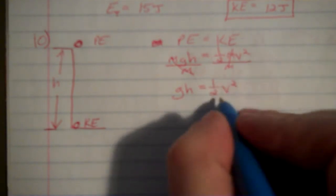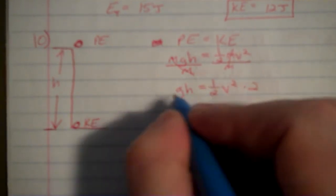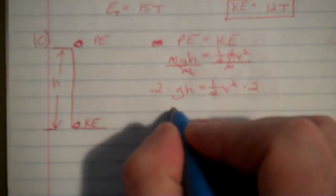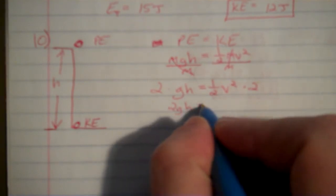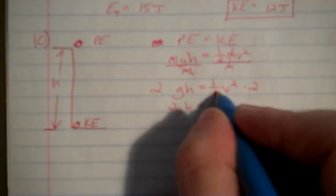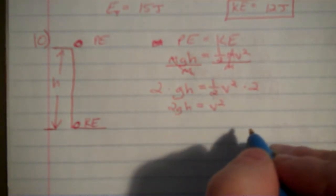Now I've got the half in there, I want to get rid of that. So I'm going to multiply by 2, I have to do that to both sides. All right, so I have 2gh, now equal to, 2 cancels the half, v squared. And I'm almost there.